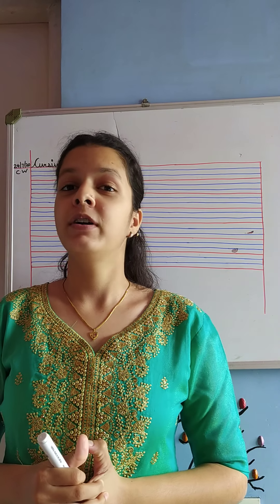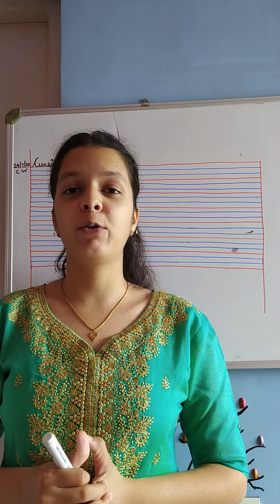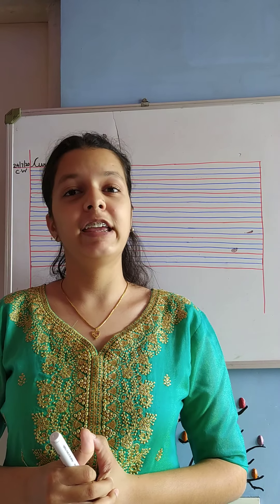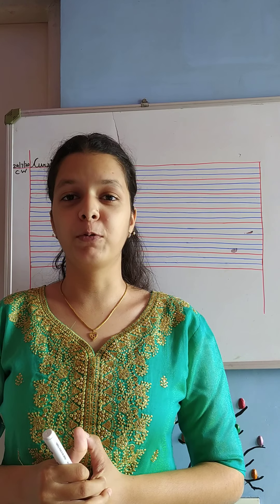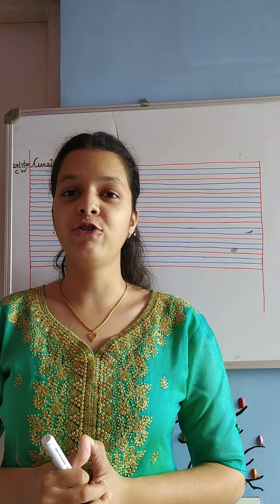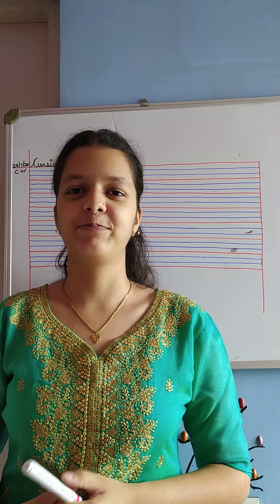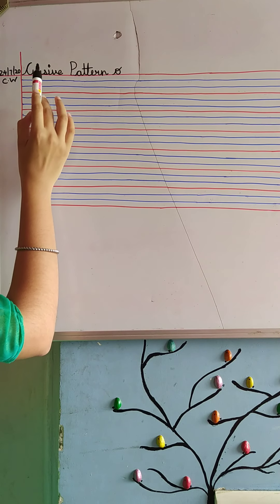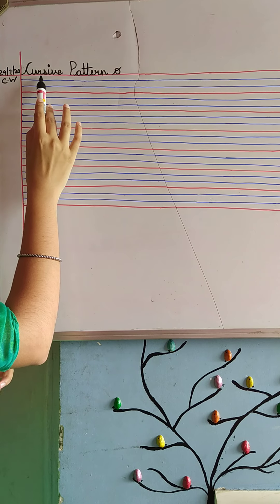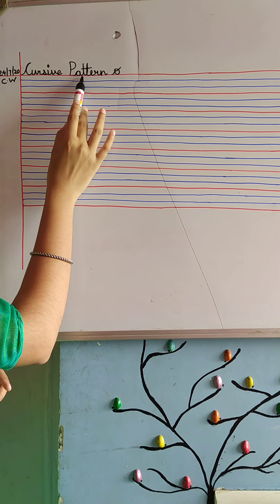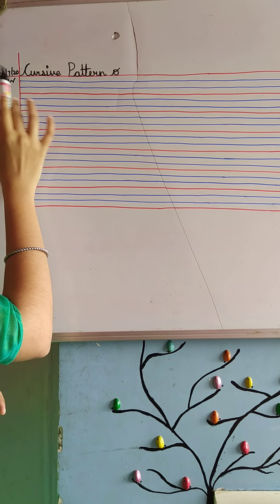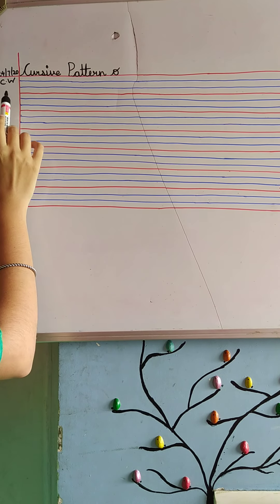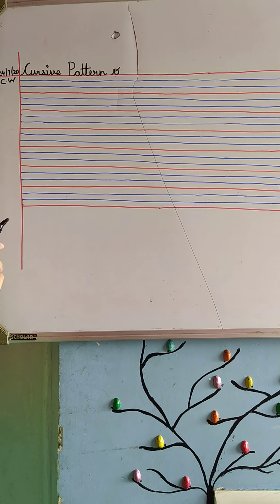So go bring your E1 notebook, which is of the first term. You are going to write the title: cursive patterns O. Today's date and CW.